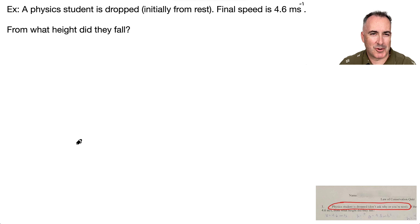Let's do one more example. I was inspired by this. If you look down at this, I think it's a law of conservation quiz. A physics student is dropped. Don't ask why or you're next. And I actually looked up the rest of the question. So it was 4.6 meters per second. That was your final speed. And then from what height did they fall? So I decided let's actually do this as a real question. A physics student is dropped initially from rest, and their final speed is 4.6 meters per second. That means that's the speed like when they hit the ground. From what height above the ground did they fall?